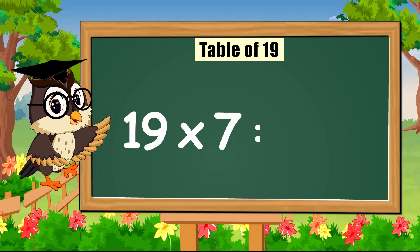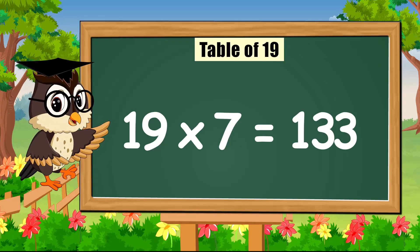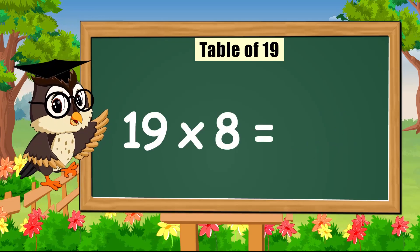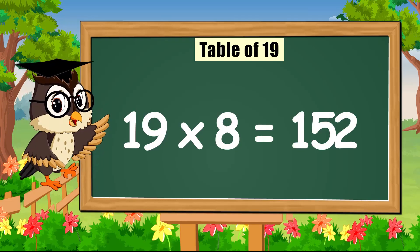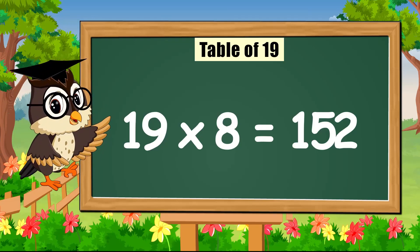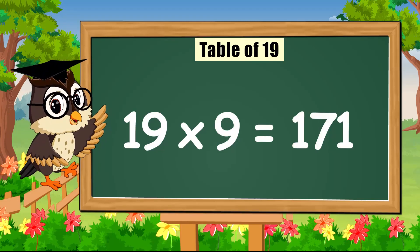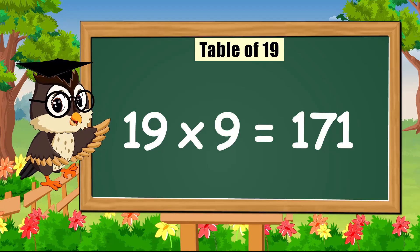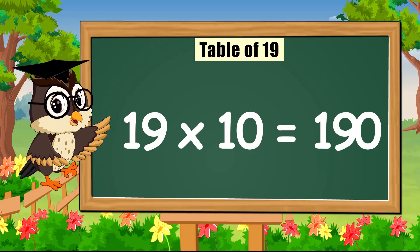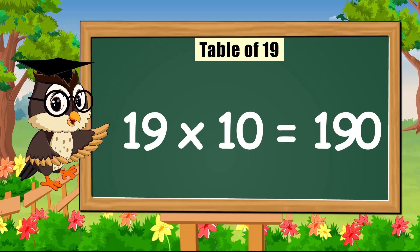Nineteen times seven is a hundred and thirty-three. Nineteen times eight is a hundred and fifty-two. Nineteen times nine is a hundred and seventy-one. Nineteen times ten is a hundred and ninety.